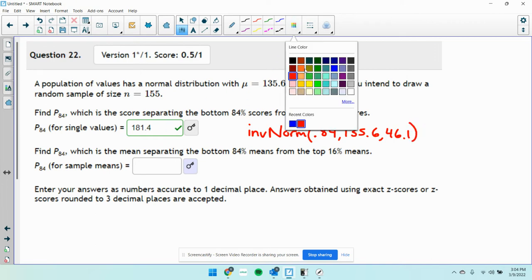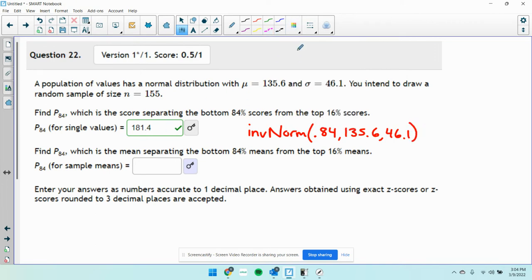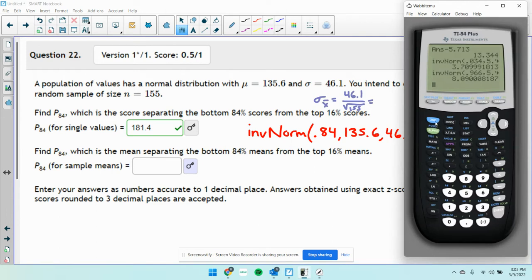The thing to consider here is when you're talking about a sample, that's going to change your standard deviation. When we do these calculations, we don't use this. We use σ of x̄, which is equal to the σ of the population divided by the square root of the sample size. So we do 46.1 divided by the square root of 155.